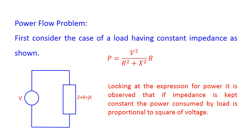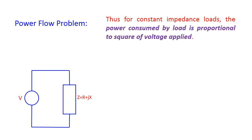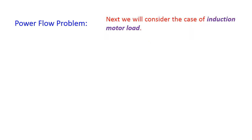Making a substitution for current I, we get real power consumed by load P equal to V squared divided by (R squared plus X squared), multiplied by R. Looking at this expression for power, it is observed that if impedance is kept constant, the power consumed by the load is proportional to the square of the applied voltage. Thus, for a constant impedance load, the power consumed is proportional to the square of the voltage applied.